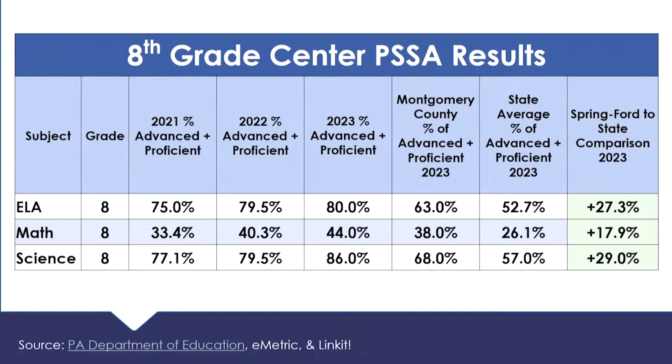Thank you. What that information actually does show is a representation of where students were against those eighth grade standards at that given point in time. I think you're referring to where that 44% is — that is a concern for us, because we do believe our students are able to produce higher level scores on that. One of the things we continue to look at is the growth of individual students. One of the metrics is called PVAS — we're able to look at what a student was able to do in, say, seventh grade, and making sure that they're continuing to grow as an individual, then looking for supports, whether it's enrichment or remediation. So this isn't a grade, per se. If you're thinking of a failing grade, this is a percent of students that were considered proficient or advanced on this particular exam for those particular standards.